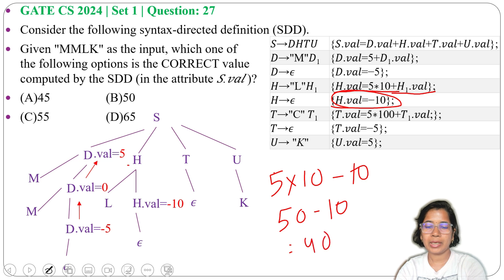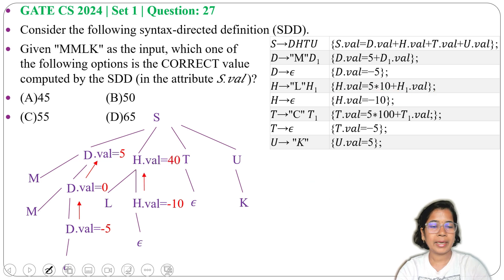Next, T derives epsilon, so T.val = -5. Then U derives K, so U.val = 5. We got all D, H, T, and U values.